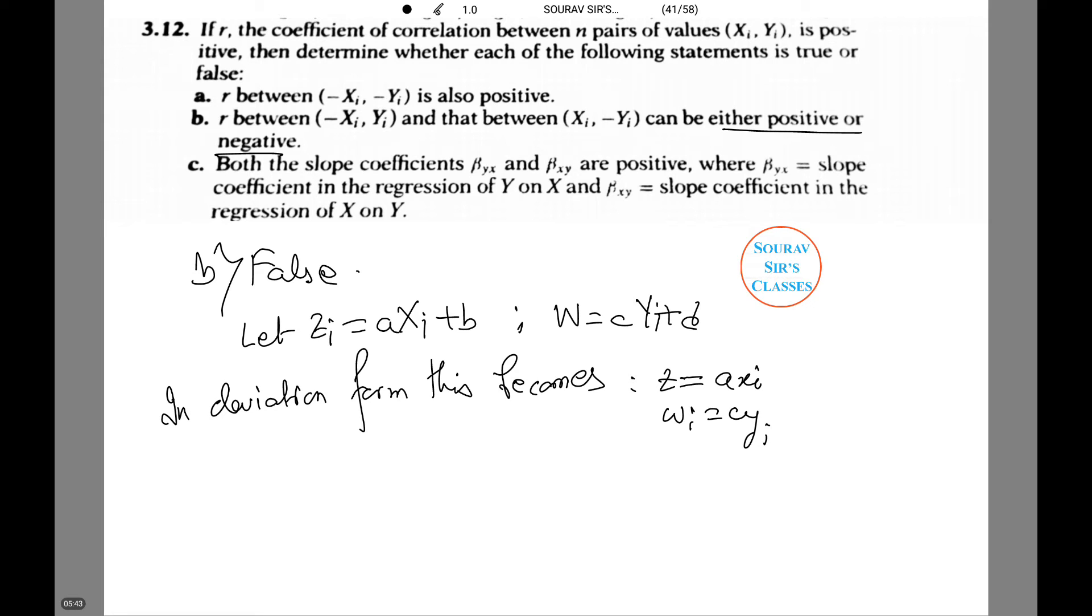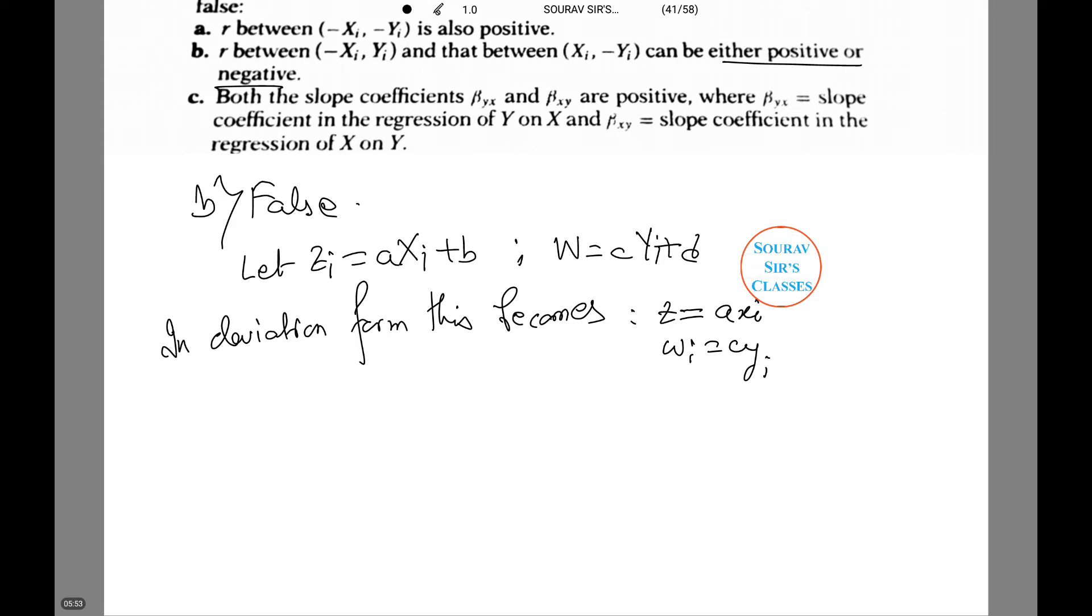Let zi equals a·xi + b and wi equals c·yi + d. Now in deviation form this becomes z equals a·xi, w equals c·y. Now r² equals summation zi·wi over root of summation zi square times summation wi square.